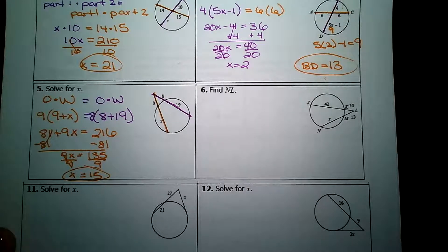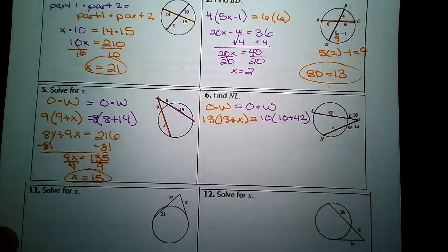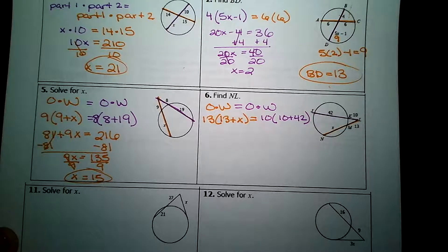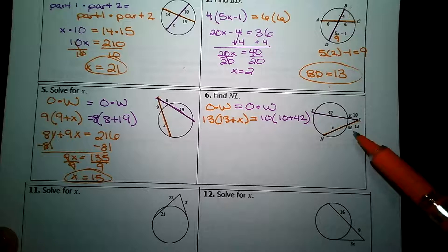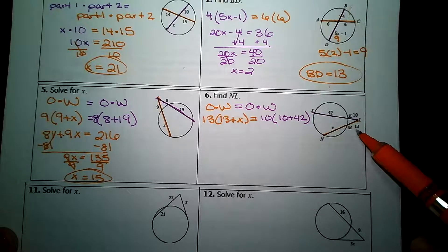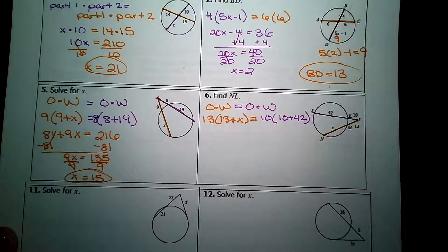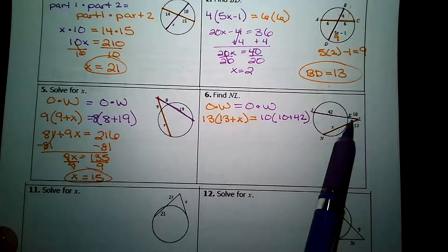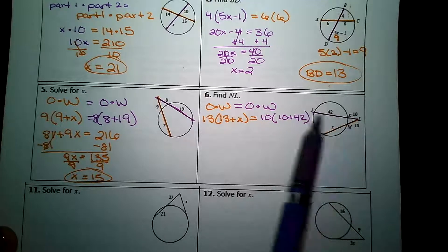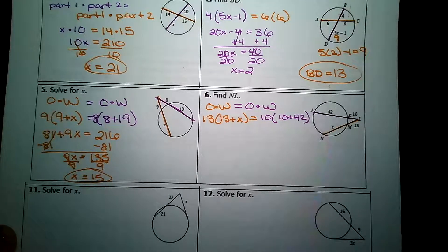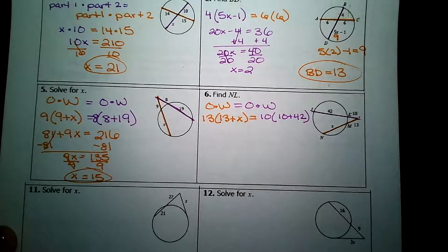I want you to try to set up and solve number 6 for yourself. If you'd like to check my setup, I've stopped here so that you can compare. I'm using the outside times whole pattern. On my orange cord, the outside value is 13. The entire length is whatever 13 plus x is. On my purple cord, the outside value is 10. And the entire length is whatever 10 plus 42 is. Okay? Finish out this tough algebra problem. You got it.